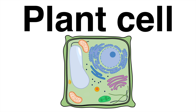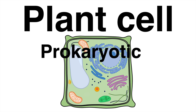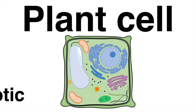In cell biology, one distinguishes between prokaryotic and eukaryotic cells. One type of eukaryotic cell and the functional basic unit of plants is the plant cell. There are a lot of important components within the plant cell which fulfill diverse functions.